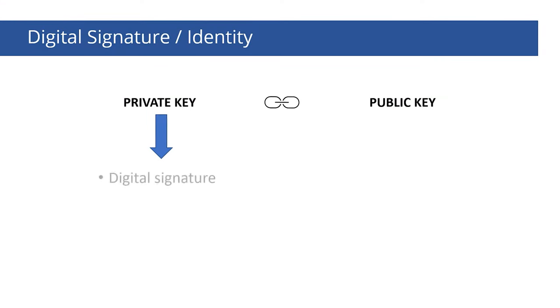We can conclude that the private key is used to generate a unique identifier of data, which is called a digital signature, while the relevant public key decrypts it and plays the role of the digital identity of the person who owns the private key. Digital signatures are the next crucial element of blockchain technology. Blockchain technology is a kind of database that keeps records of ownership. The cryptocurrency is attached to users' public keys.